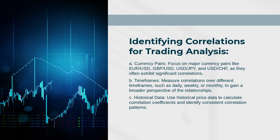Identifying correlations for trading analysis. Currency Pairs: Focus on major currency pairs like EURUSD, GBPUSD, USDJPY, and USDCHF, as they often exhibit significant correlations. Time Frames: Measure correlations over different time frames such as daily, weekly, or monthly to gain a broader perspective of the relationships. Historical Data: Use historical price data to calculate correlation coefficients and identify consistent correlation patterns.